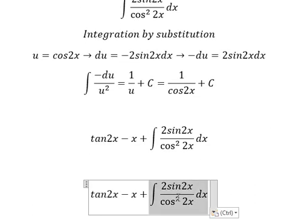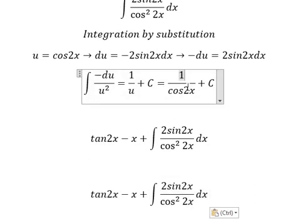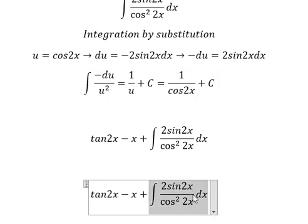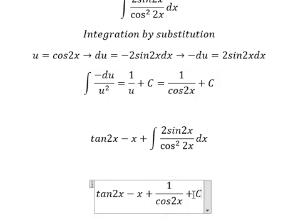Since u = cos2x, the integral equals 1/cos2x plus C. This is the end. Thank you for watching.